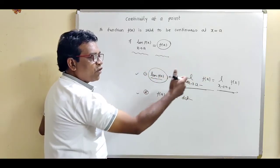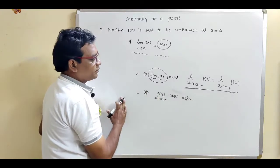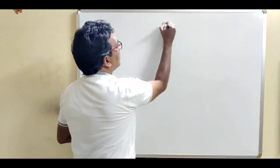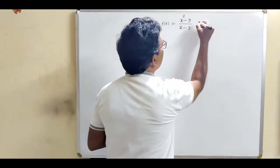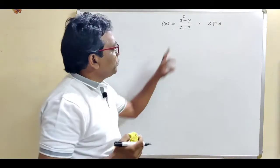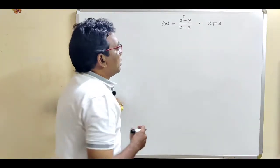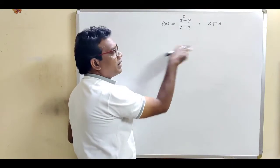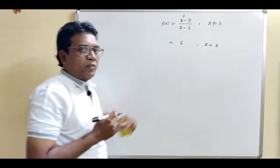So for continuity: first, the limit of function should exist, meaning limit from left and limit from right are always equal; and second, the value of function should be well defined. Now let us discuss one example. Suppose f(x) equals x squared minus nine divided by x minus three. This function is valid for every value except x equal to three, because at x equals three the denominator is zero and the function is undefined. And f(3) is separately given as 6.